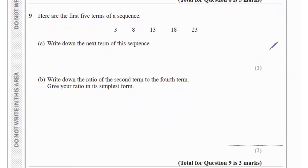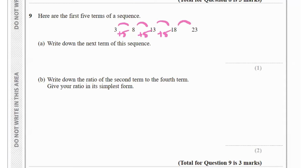Question 9 shows the first five terms of a sequence: 3, 8, 13, 18, and 23. Between each term we are adding 5. So for the next term we also add 5: 23 plus 5 equals 28.